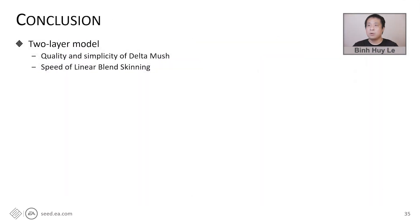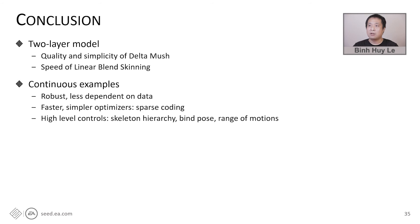In conclusion, we have proposed a two-layer skinning model that takes the best of both worlds, the high quality with the simple setup of the DDM deformer, and the fast performance of the linear blend skinning. Our model is automatically computed from a direct delta mush model by skinning compression with continuous examples. The computation is robust and easy to implement, and our formulation is flexible enough to support high-level controls such as skeleton hierarchy, bind pose, and range of motions. We also found a fix for the floating-point cancellation issue of DDM.